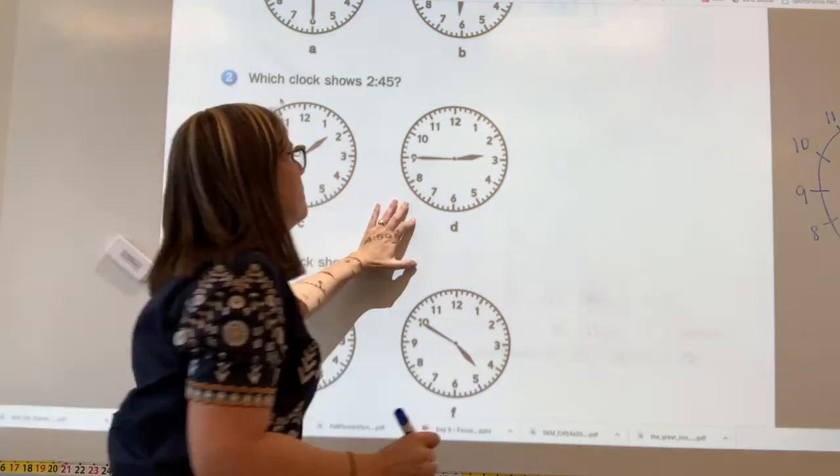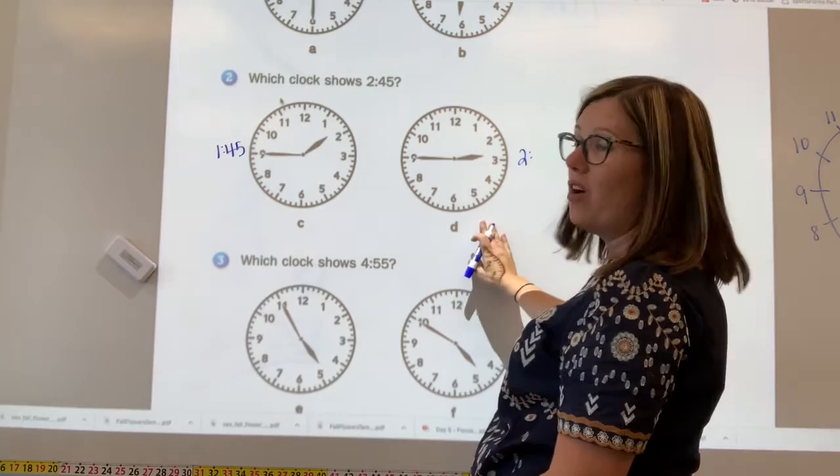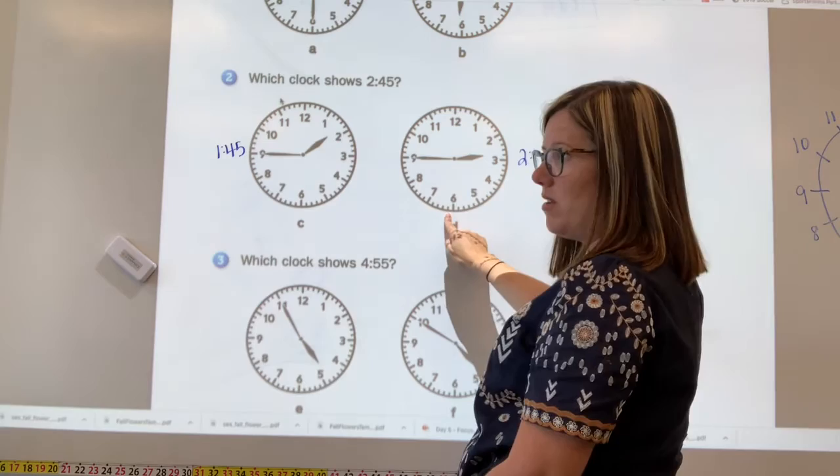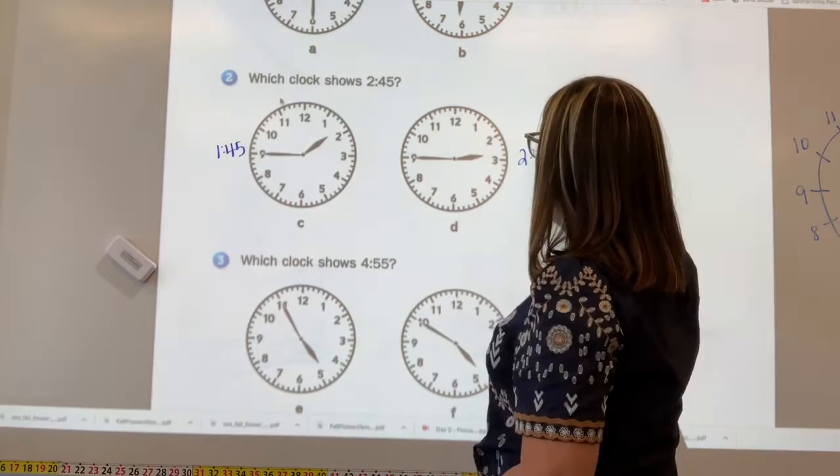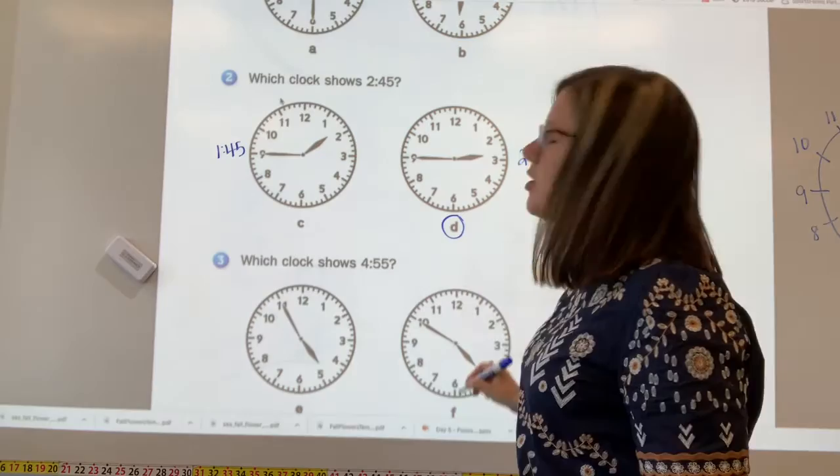Let's see what this clock says. This one, my hour hand is between the two and the three. That means it's still two o'clock. So that's two. And then I'm going to count my minutes. Well, and I know when I get to the six, that's 30. So you might use that as kind of a helper. 30, 35, 40, 45. So I believe that clock says 245. So which clock would I circle? I would circle clock D. I read that wrong.